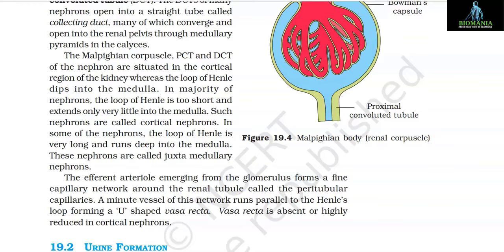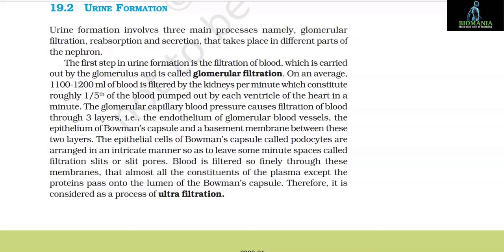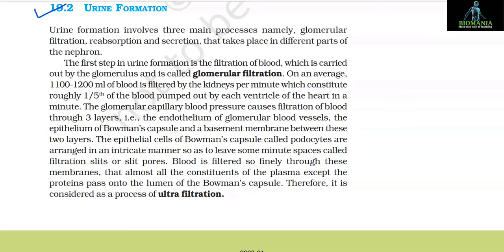The Malpighian corpuscles, PCT, and DCT of the nephron are situated in the cortical region of the kidney, whereas the loop of Henle dips into the medulla. In majority of nephrons, the loop of Henle is short and extends only a little into the medulla — these are called cortical nephrons. In some nephrons, the loop is very long and runs deep into the medulla — these are called juxtamedullary nephrons. The efferent arteriole forms a fine capillary network called peritubular capillaries, and a minute vessel runs parallel to Henle's loop forming a U-shaped vasa recta. Vasa recta is absent or highly reduced in cortical nephrons.